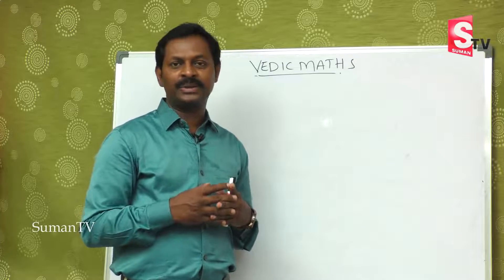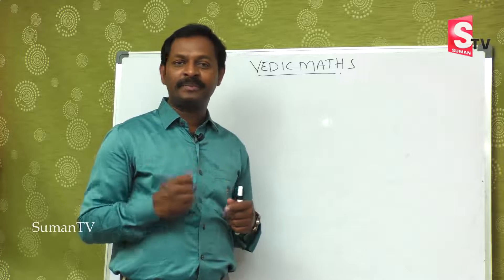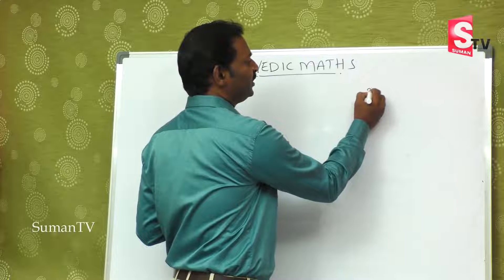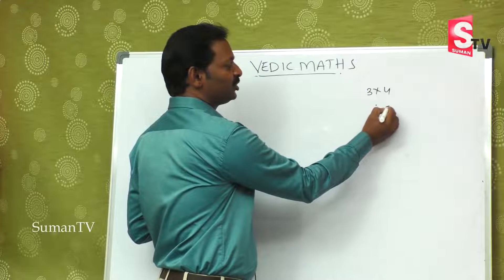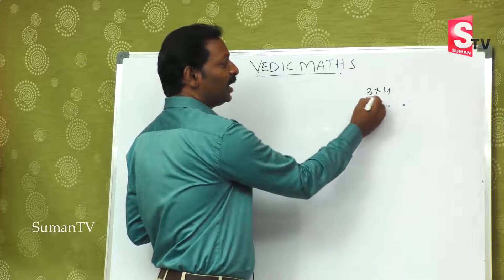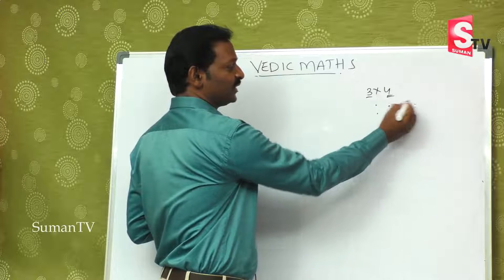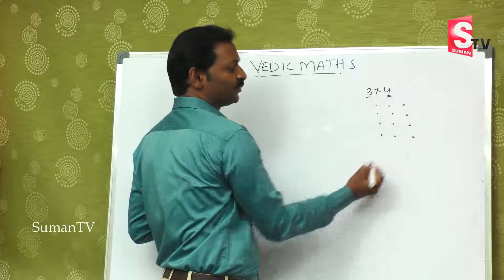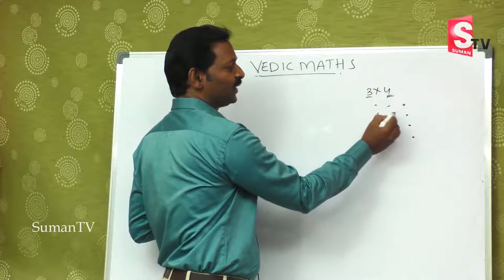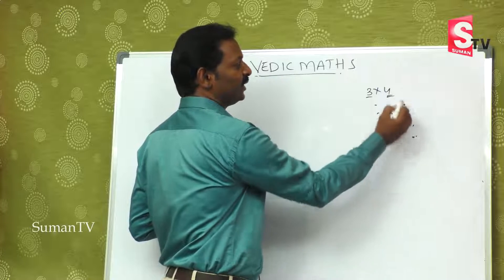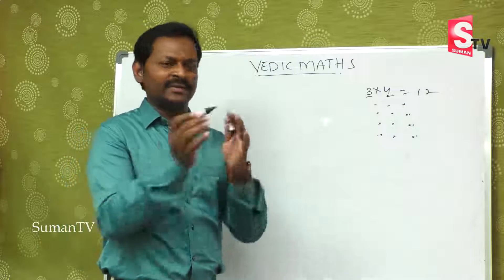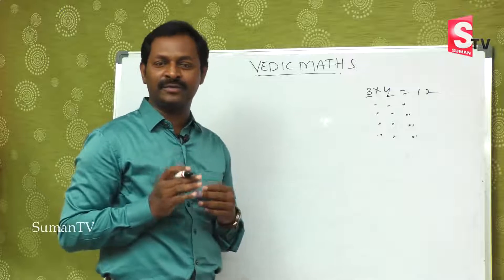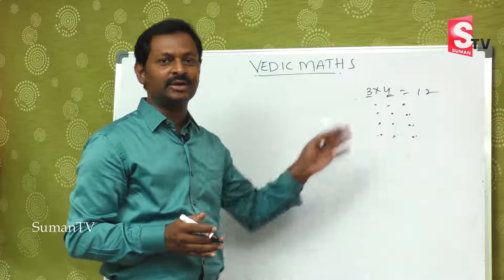Previously, to do multiplication — suppose 3 into 4 — we would count 3, four times: first time, second time, third time, and fourth time. So counting gives us 1, 2, 3, 4, 5, 6, 7, 8, 9, 10, 11, 12 — equal to 12. And then we have to do tables by heart. At least 9 tables, we have to do calculations with many dot methods.